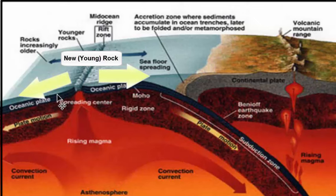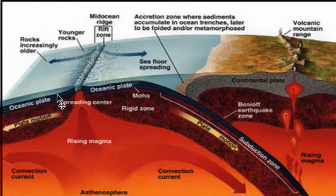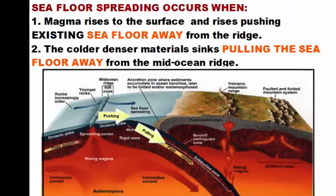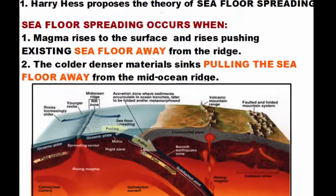A second force helping seafloor spreading occur is that when oceanic crust collides with continental crust, the oceanic crust — being heavier and more dense — sinks down into the Earth and pulls the rest of the ocean floor with it. So the forces of pushing at the ridge and pulling of the plate cause the ocean floor to spread. Let's look at an animation of this.